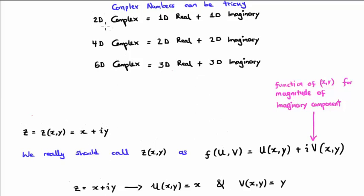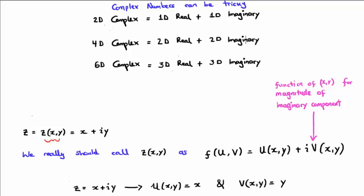We've already seen that a two-dimensional complex number has a single real component and a single imaginary component. But if we talk about three real components like x, y, and z, we now have a six-dimensional complex number. Now, probably the best way to represent a complex number z is actually in a functional form, where we say z is a function of x and y, if of course it's given in this particular format here.